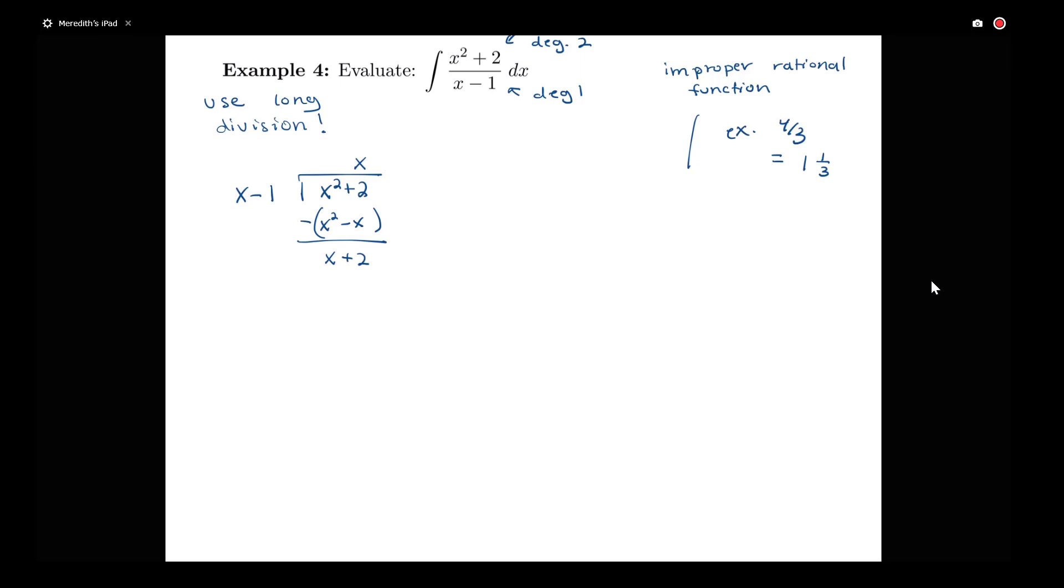I'm not done yet, because this is the same degree term as what I'm dividing by. So I notice that this x minus 1 is going to go into this just one time, so I'm going to do plus 1. And then I have 1 times x minus 1 is x minus 1.